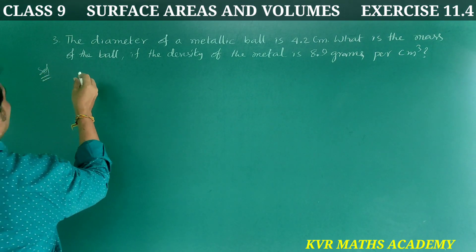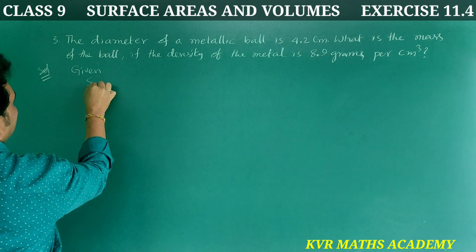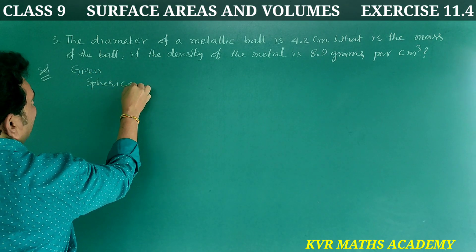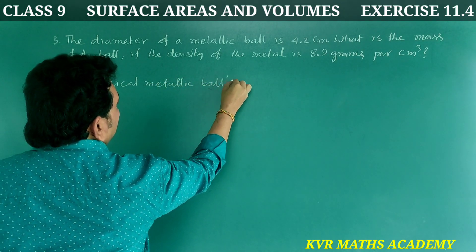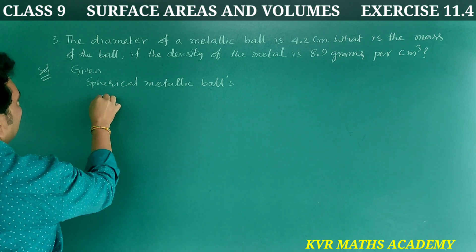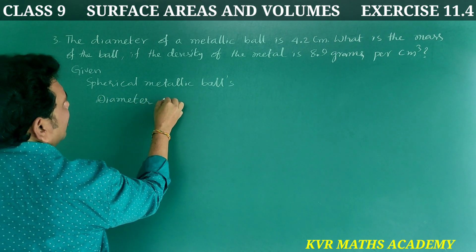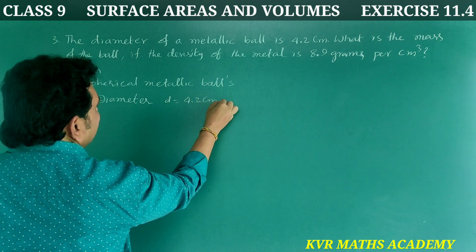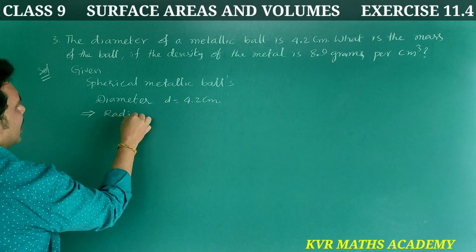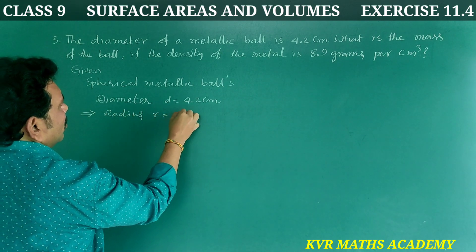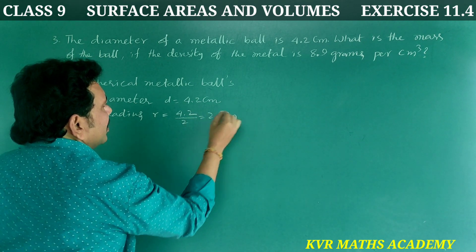Solution. Given: spherical metallic ball diameter D is equal to 4.2 centimeters. That implies radius R is equal to D by 2, which is 4.2 by 2, that is equal to 2.1 centimeters.